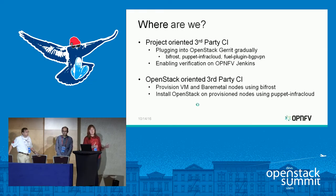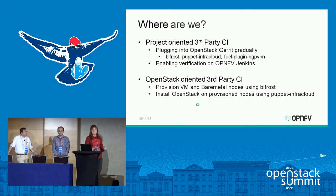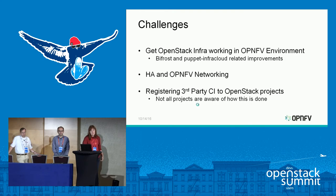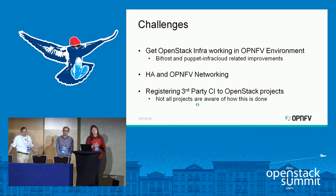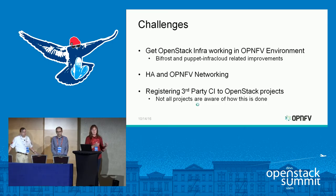At the moment, we have this functional testing up and running. We are adding third-party CI to several projects — for example, it is done with Bifrost, and we want to do it with Puppet InfraCloud as well. This functional testing is available on OPNFV Jenkins right now. The main challenges I found when reusing Puppet InfraCloud: it was totally focused for OpenStack Infra and only available for Ubuntu. The manifest didn't even run on CentOS or SUSE, so we had to modify it and make patches. Now there is proper support on these three platforms.